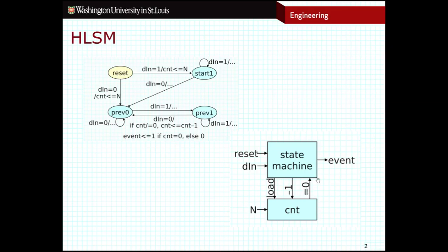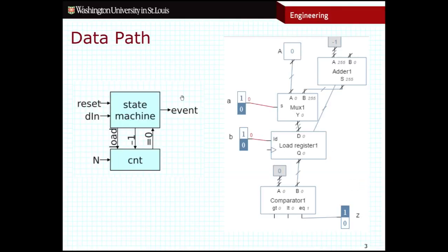And we can see that the state machine and the data path have to interact with one another in order to implement the high-level state machine. In the last video, we actually took a look at the data path. So that's this section down here at the bottom. And we see that the data path has really three inputs: N,